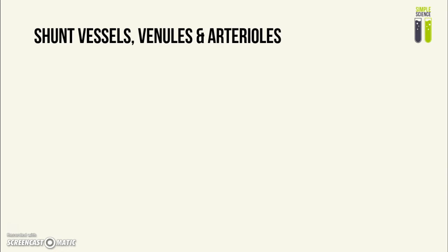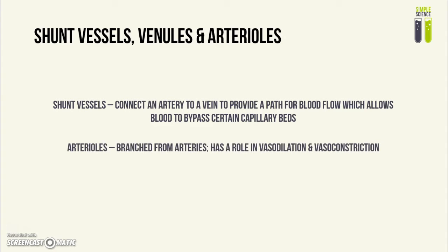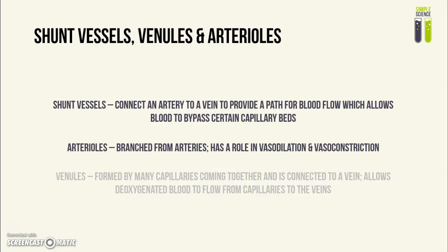Shunt vessels are blood vessels that connect an artery to a vein, providing an alternative pathway for blood flow so that blood can bypass a bed of capillaries. An arteriole is a blood vessel that branches from an artery — smaller than arteries but not yet a capillary — and it plays a role in vasodilation and vasoconstriction in thermoregulation. Venules are formed by many capillaries coming together; their function is to allow blood to flow from a bed of capillaries into the veins.